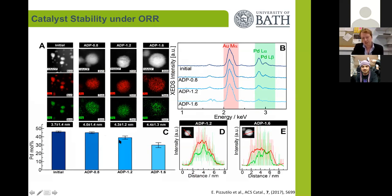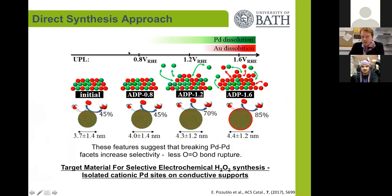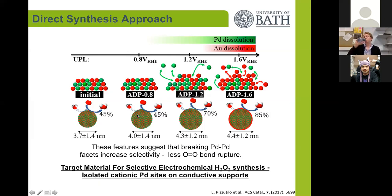We then retested these catalyst systems to see how they perform in hydrogen peroxide synthesis with these slightly modified structures. As we start to take palladium out of the surface, the selectivity towards hydrogen peroxide began to increase. Initially the selectivity of this gold-palladium particle was around 45%. By cycling up to 0.8 V, where we don't see any leaching, we again measured a selectivity of 45%.